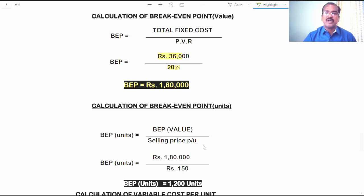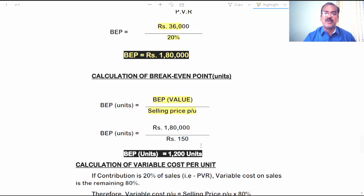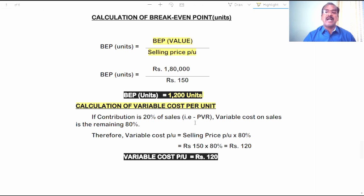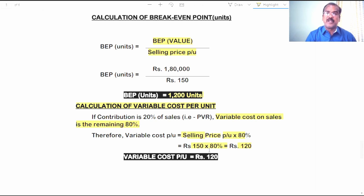After finding BEP in value, dividing by selling price per unit gives the number of units at Break-Even Point. BEP in value divided by selling price per unit gives 1,200 units. For variable cost: if PVR is 20 percent of sales, contribution is 20 percent of sales, so the remaining 80 percent is variable cost. Variable cost per unit equals selling price per unit into 80 percent: 150 into 80 percent equals 120 rupees per unit.